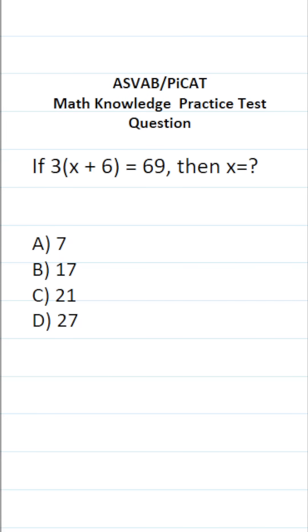This math knowledge practice test question for the ASVAB and PiCAT says, if 3 times x plus 6 in parentheses equals 69, then x equals. So we're going to be solving the equation 3 times x plus 6 equals 69.